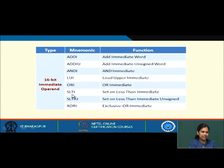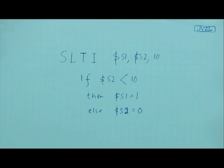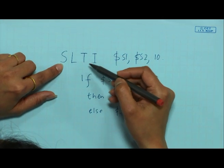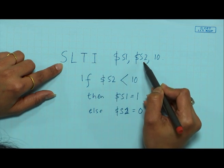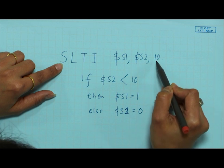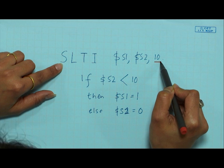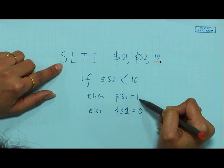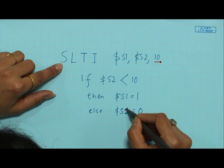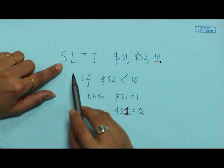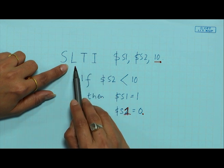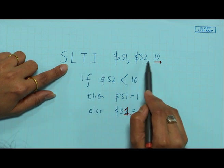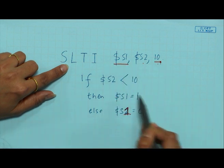Let us take an example of set on less than immediate. The meaning is: if S2 is less than the immediate value 10, then you set S1 to 1; else you set S1 to 0. So set on less than immediate sets a particular register (S1) if the source register (S2) is less than the immediate value.